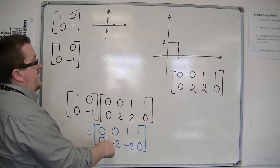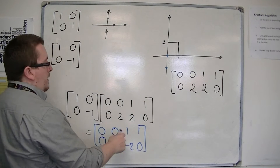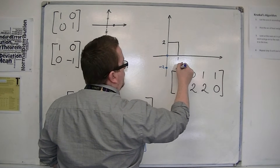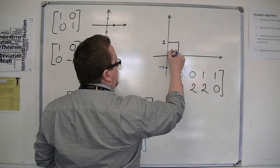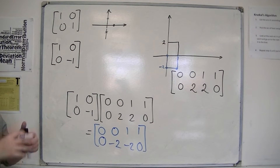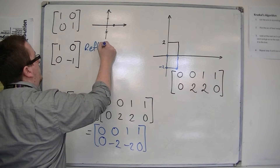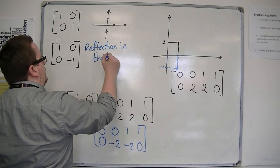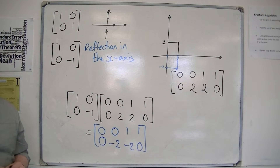I get (0, -2), so that's minus 2. I get (1, -2), and (1, 0). So you can see that the rectangle has been reflected in the x-axis. That is what that matrix will do.